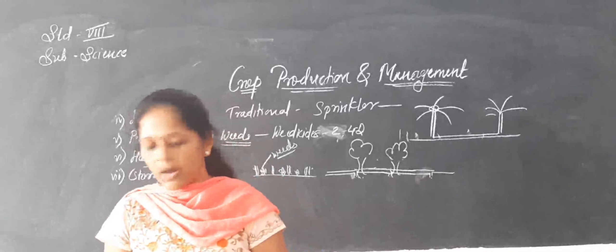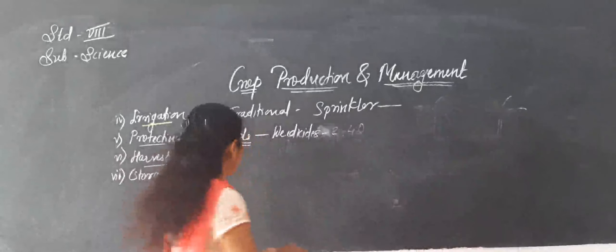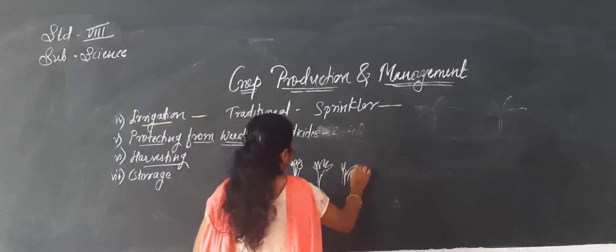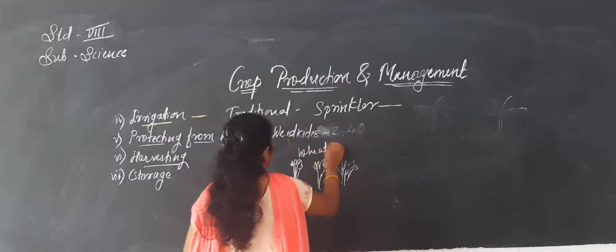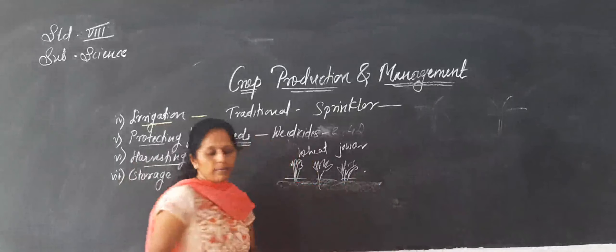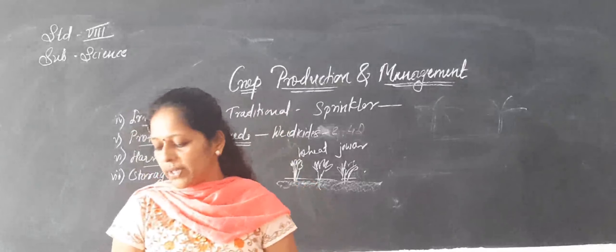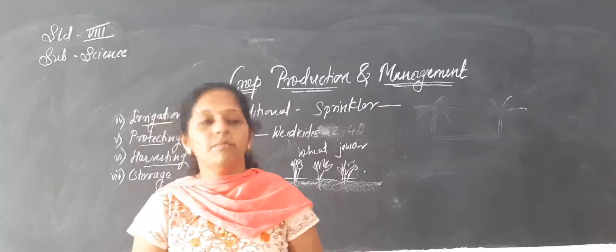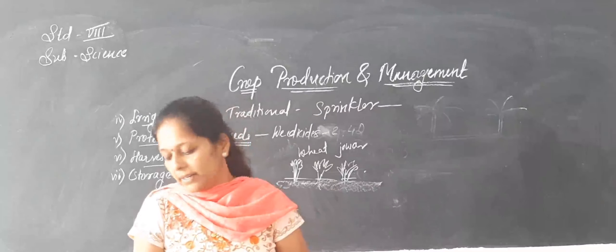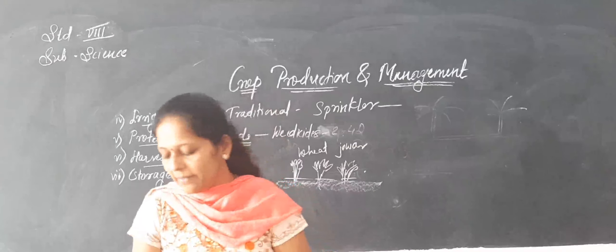It usually takes three to four months for a cereal crop to mature. When the season of maturity of the crop is complete, farmers cut it or pull out the plant. Harvesting in our country is done either manually or by sickle, or by a machine called a harvester. When small fields are available, it is done manually; otherwise a sickle or harvesting machine is used.